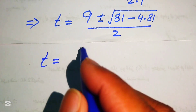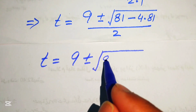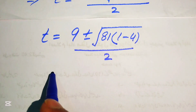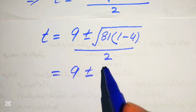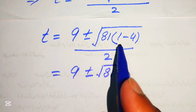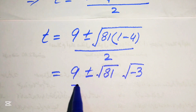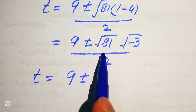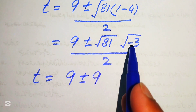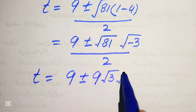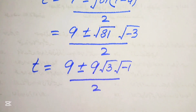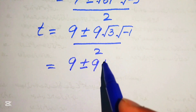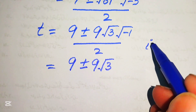We take 81 common from the two terms under the radical: √(81 · (-3)). Breaking the square root, √81 = 9 and √(-3) = √3 · √(-1) = √3 · i. So we have t = (9 ± 9√3 · i) / 2, which gives t = 9/2 ± (9√3/2)i.